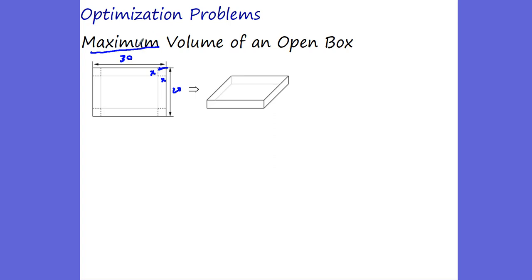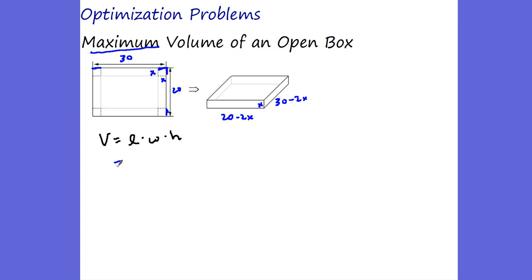I know volume equals length times width times height. My constraint is: the height has to be X. One length has to be 30 minus 2X — the side is 30 and we're taking away two X's. The other side is going to be 20 minus 2X. So our length is 20 minus 2X, our width is 30 minus 2X, and our height is X.